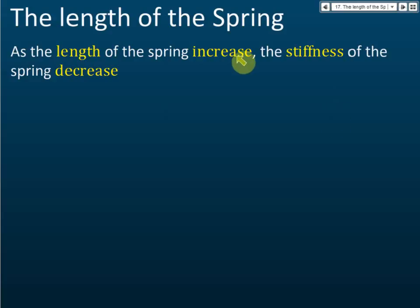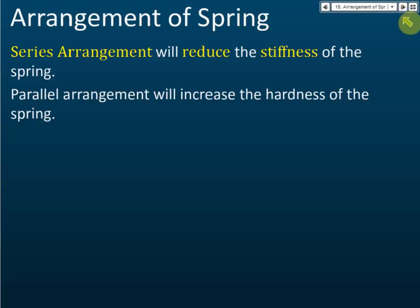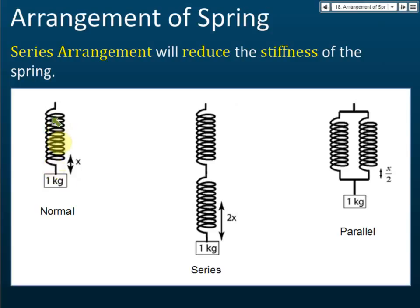The next factor is the length of the spring: as length increases, stiffness decreases, meaning a shorter spring is stiffer than a longer spring. The last factor is the arrangement of springs: a series arrangement reduces stiffness, while a parallel arrangement increases stiffness.